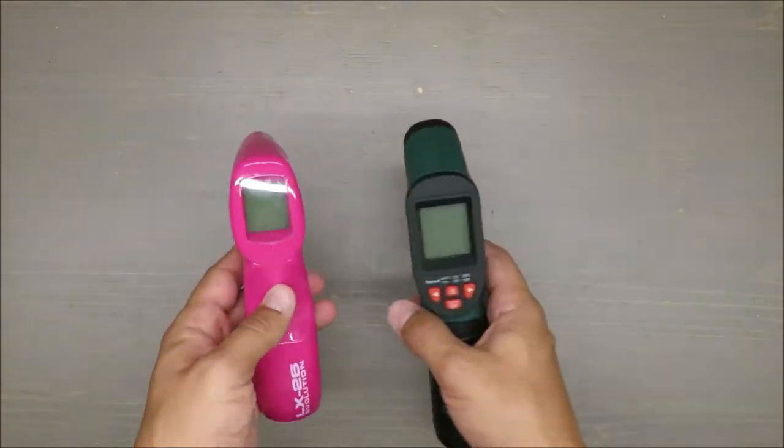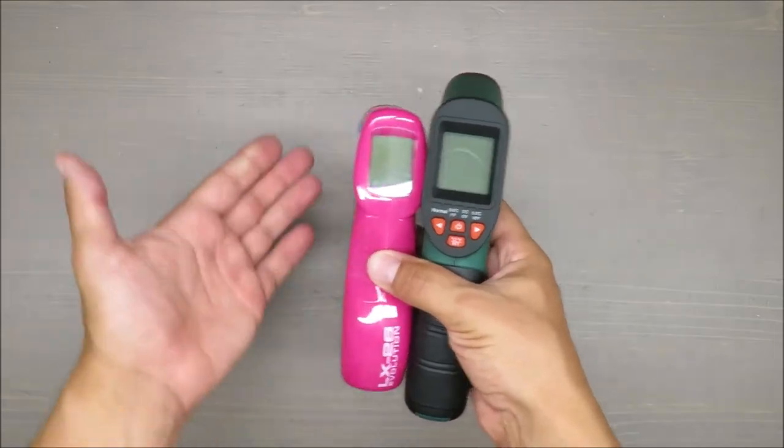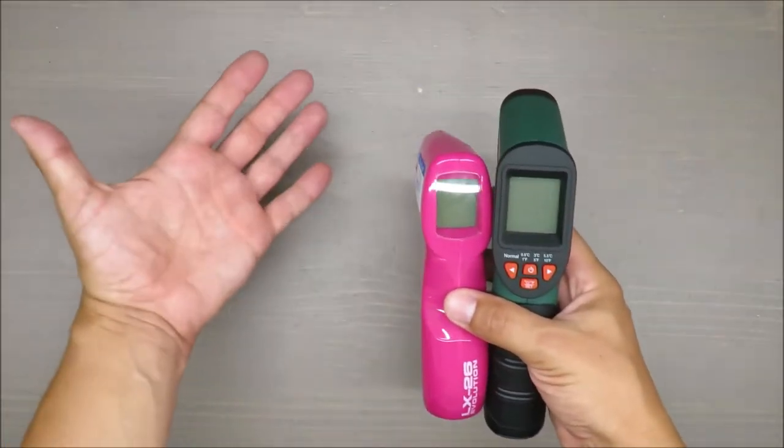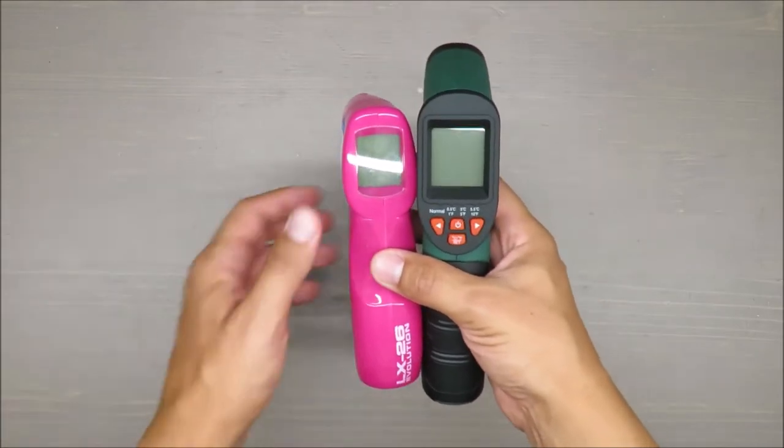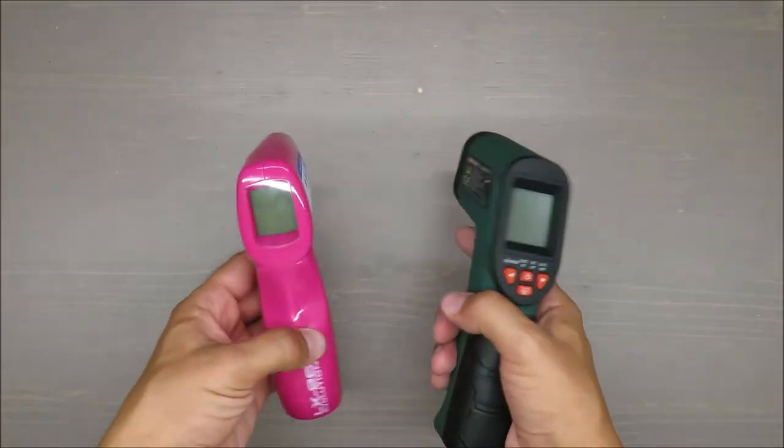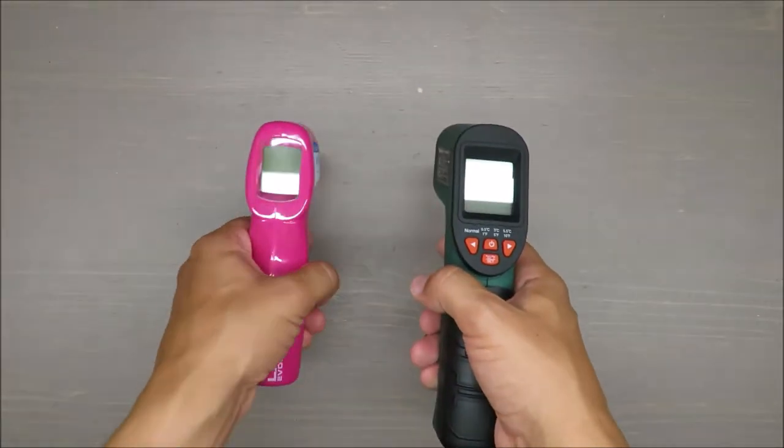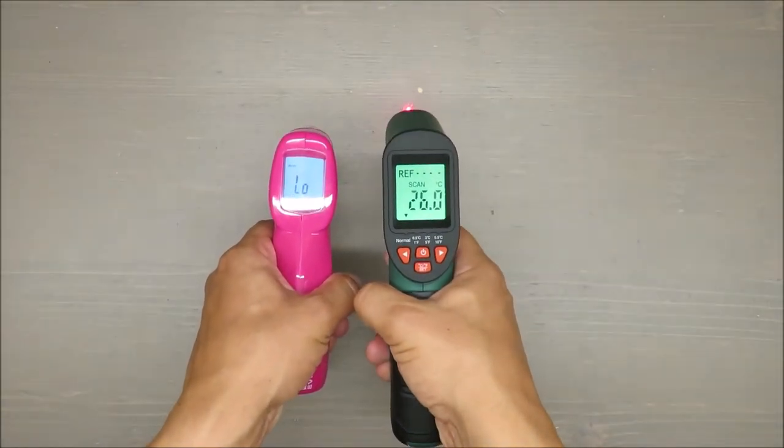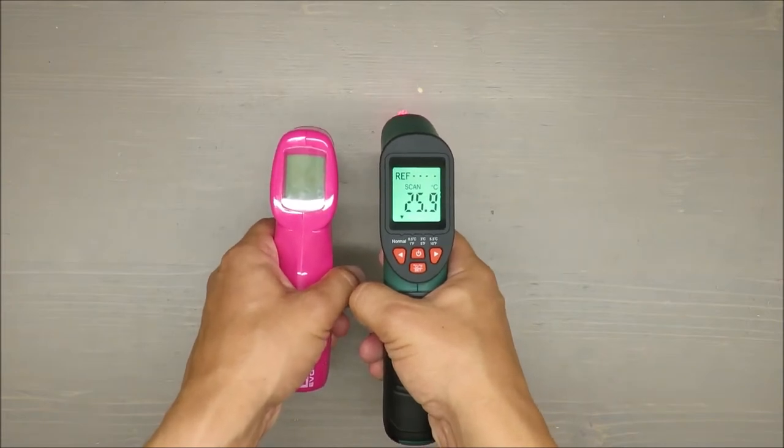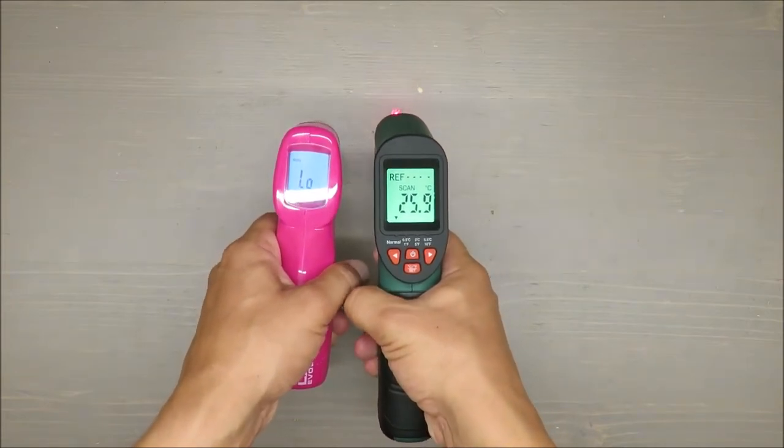Let's start from the desk. Too low, 26. So actually we can see it's not even detecting the temperature. Let's move to my hand. 36.7, 33.7.